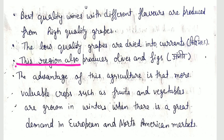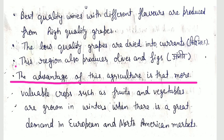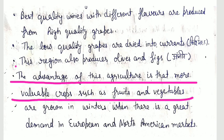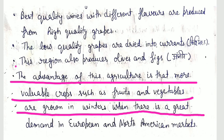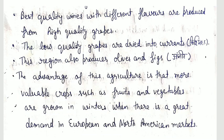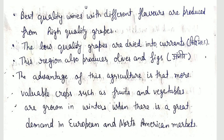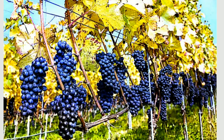This region also produces olives and figs, which are known as jaytun and anjeer. The advantage of this agriculture is that more valuable crops such as fruits and vegetables are grown in winter, when there is great demand in European and North American markets. Viticulture and grape cultivation is also important.